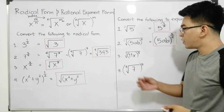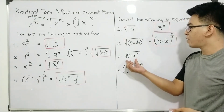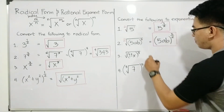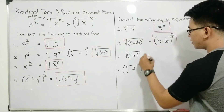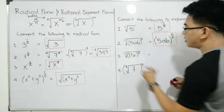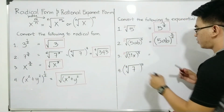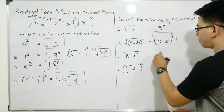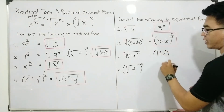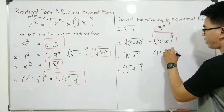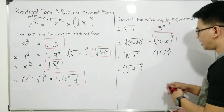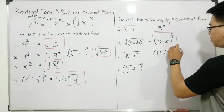Let's proceed with item number 3. We have the square root of 11x raised to the third power. To convert this, we have here the invisible 2. So the converted form is 11x enclosed in parentheses raised to 3 over 2. And this is the answer for item number 3.